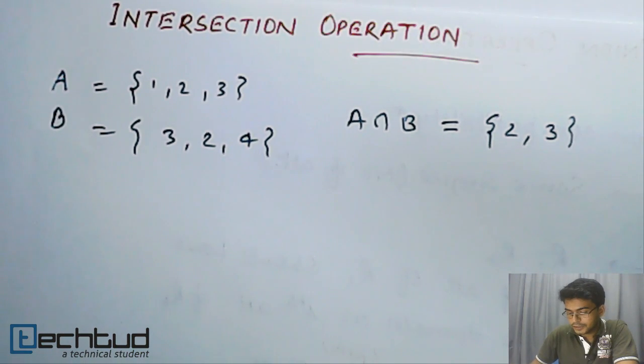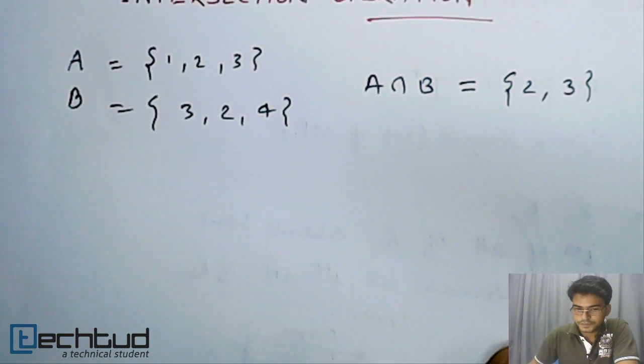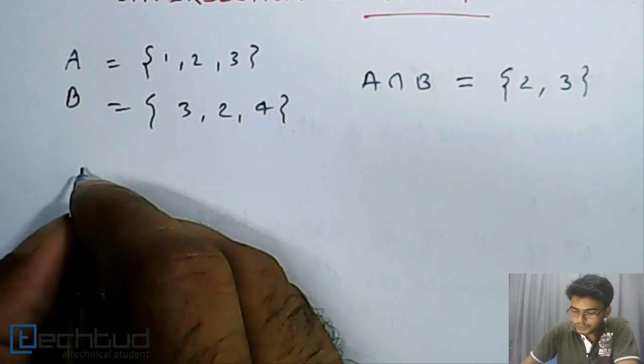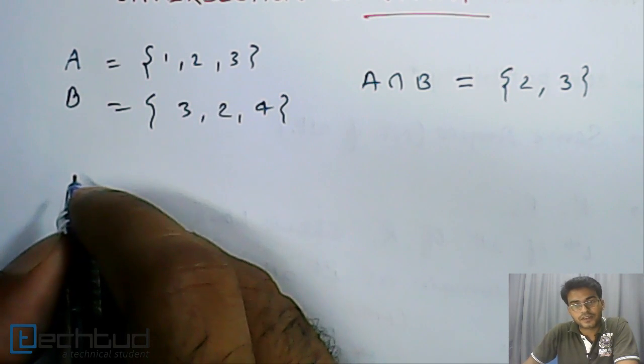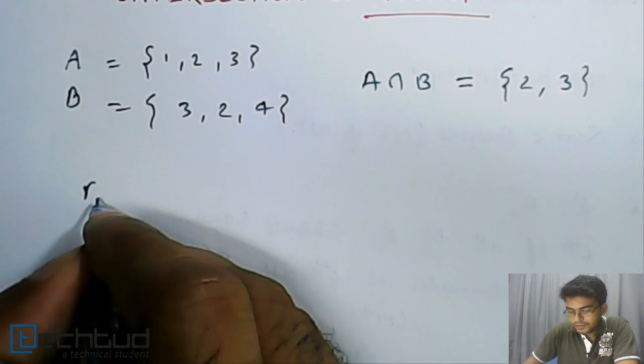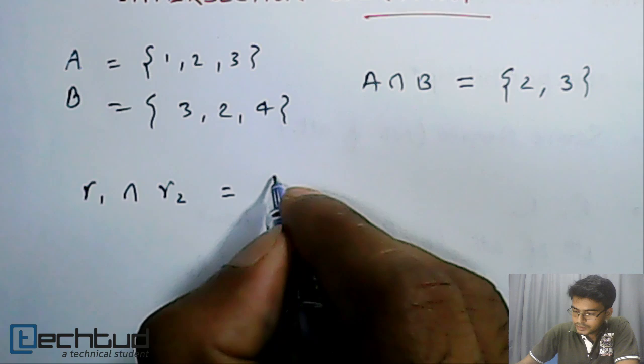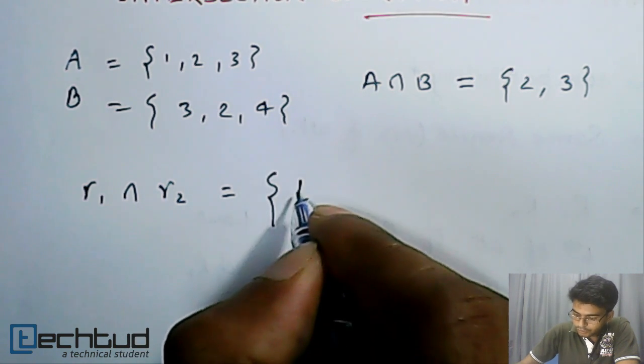Very similar to this, in relations also, what do we do? If let's say R1 and R2 are two instances of a relation, then if we have R1 intersection R2, then we will take the result, which will obviously be...